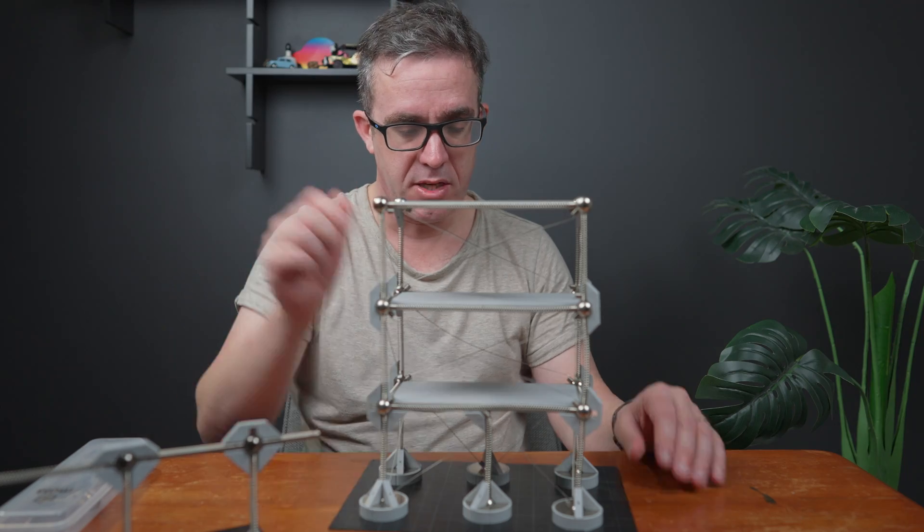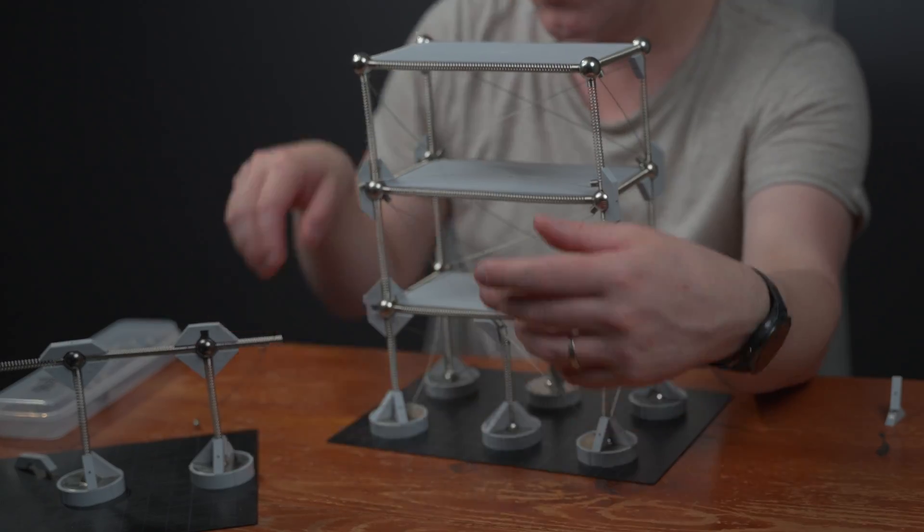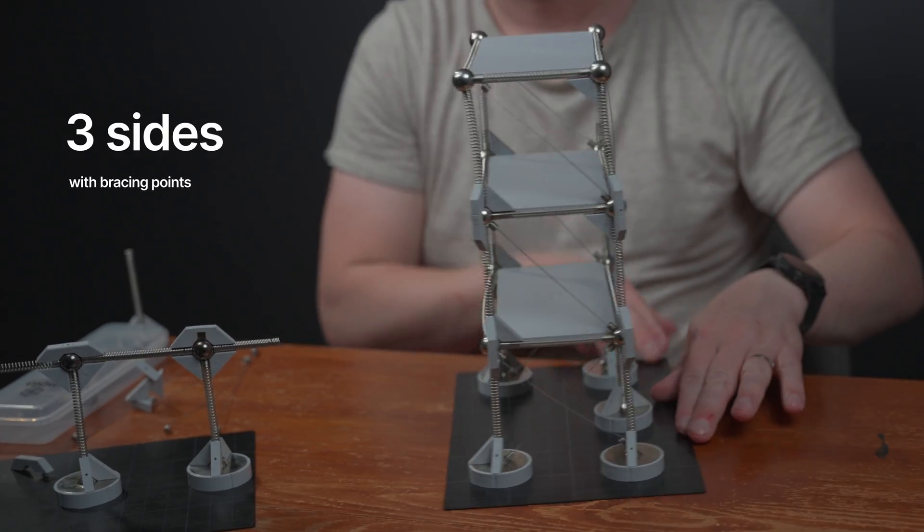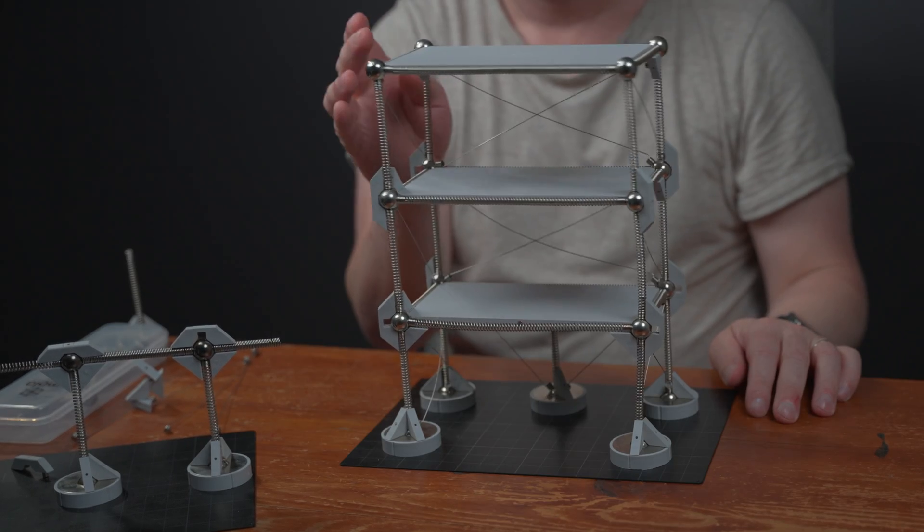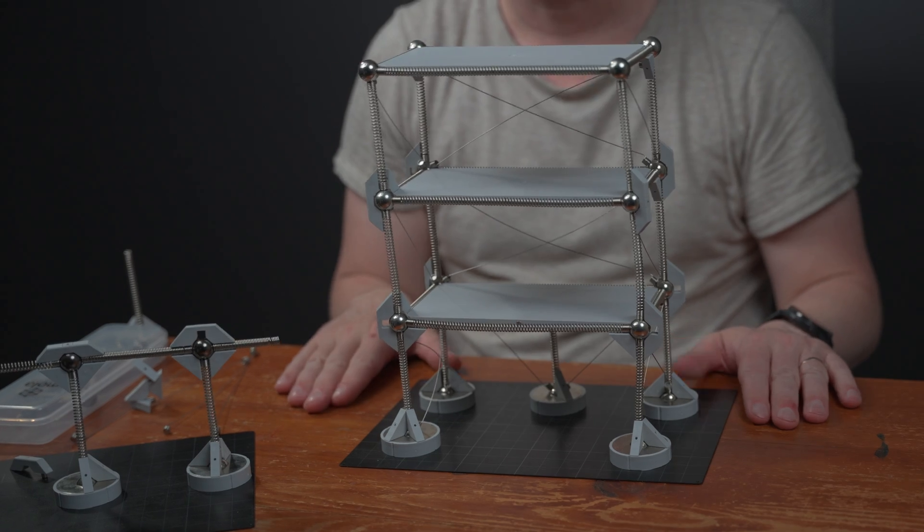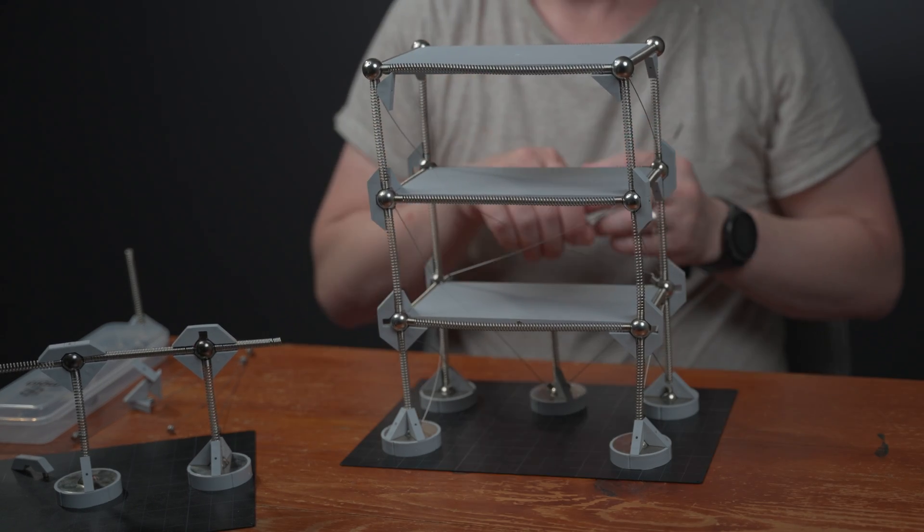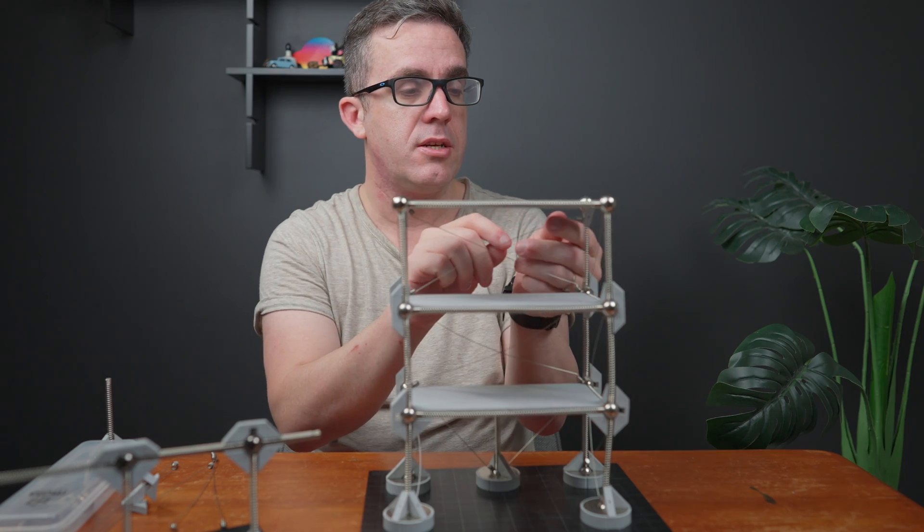Let's see what happens if we remove some of these bracing points. Now if we spin this model around you'll see that we've only got three side supports on this element. Although it's softer it's still relatively stiff.